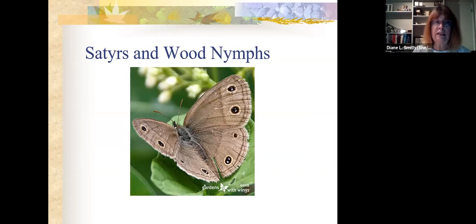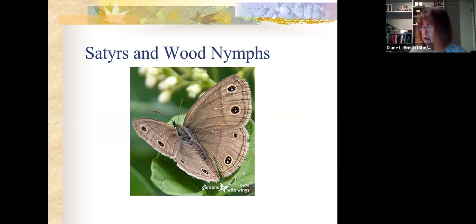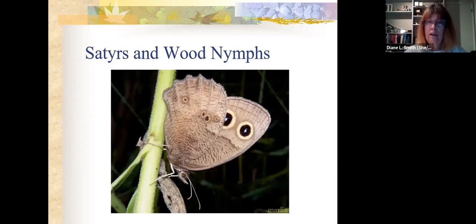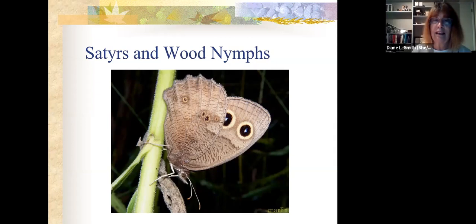Another class are the satyrs and wood nymphs — small to medium size, about an inch and a half to two inches. Not very colorful, often confused for moths. They like rotting fruit and prefer large, sunny, grassy areas, so open meadows are where we'll find these. As we go towards the ag fields during our walk, these are the ones we'll be looking for. This one is the common wood nymph — these will be somewhat difficult to identify, so we'll want our binoculars.